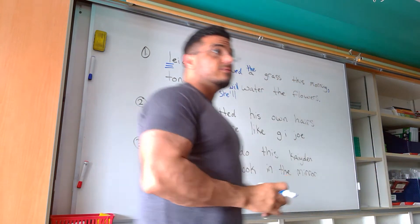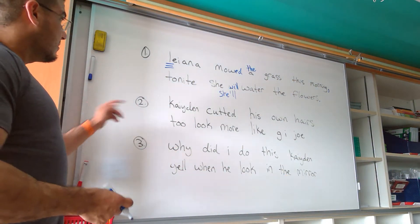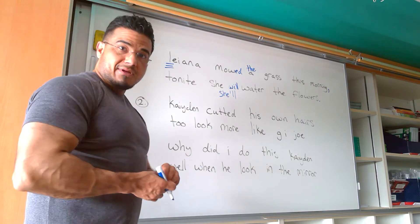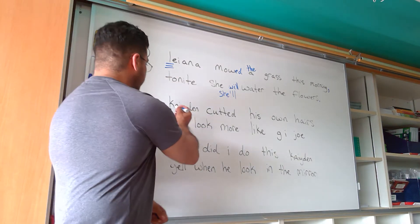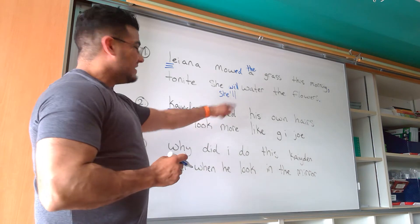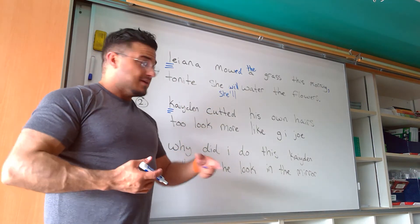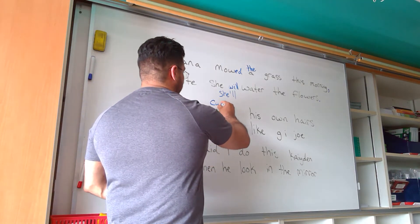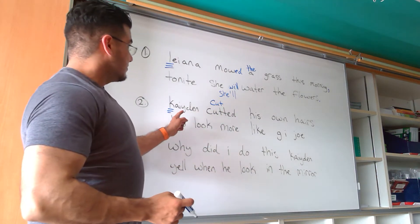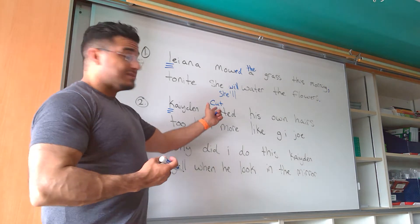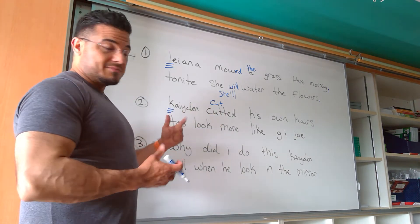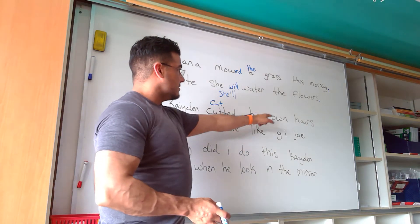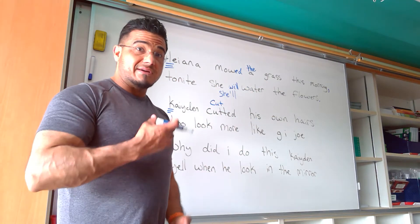Sentence number two. Caden — proper noun, also first word in the sentence — requires a capital letter. 'Cutted' is not the past tense of cut. Cut is an irregular verb, so it should just read 'cut.' So he's already done it: Caden cut his own hair. We're looking for the uncountable noun — we're not saying 'hairs.'